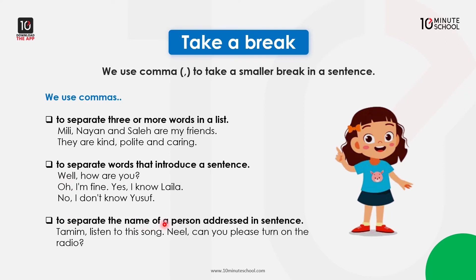We use a comma to separate the name of a person addressed in a sentence. For example: Tamim, listen to this song. Neil, can you please turn on the radio? The comma separates the name of the person being addressed from the rest of the sentence.